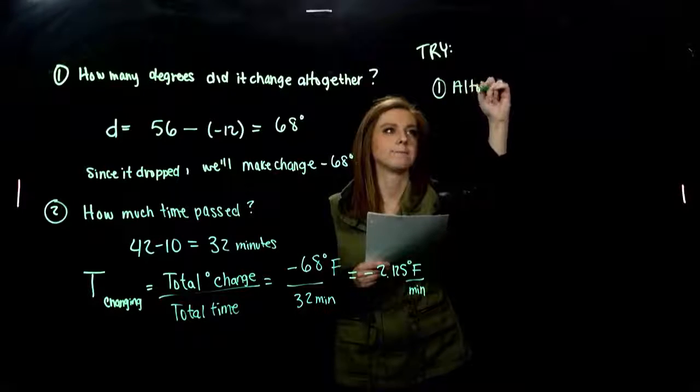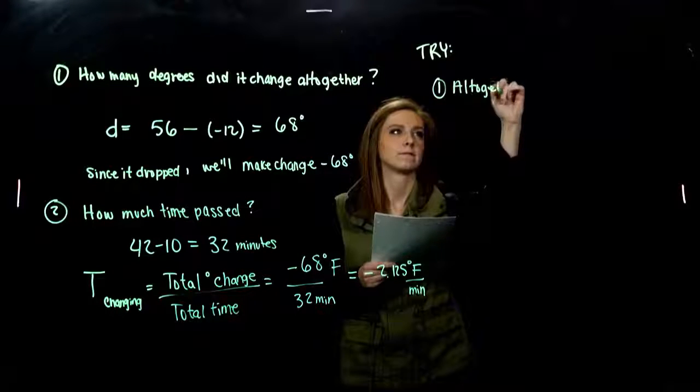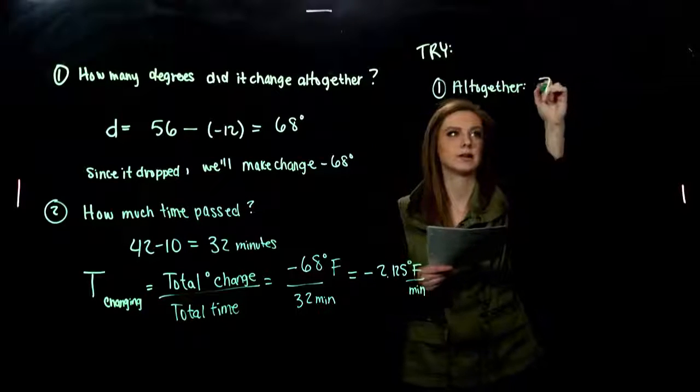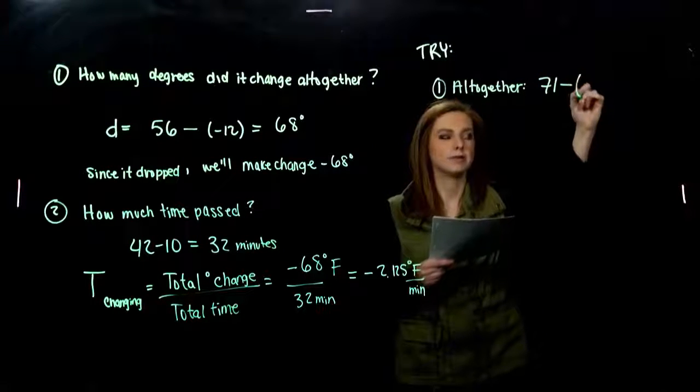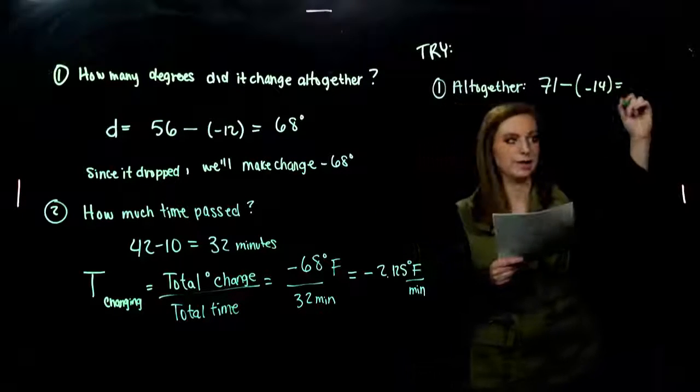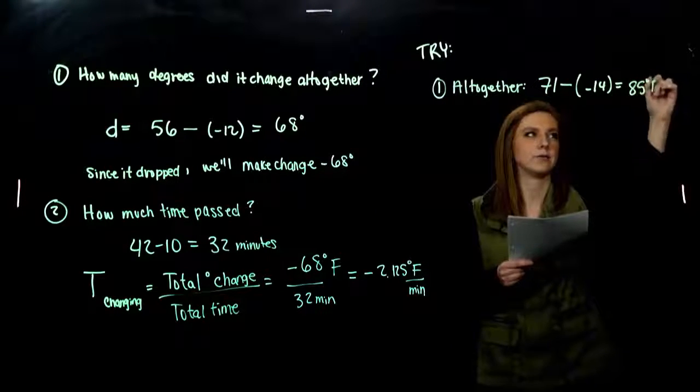So altogether, what did we have for temperature difference? It started at 71. We found a difference. The ending temperature was 14. So altogether, we had a change of 85 degrees Fahrenheit.